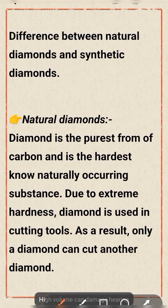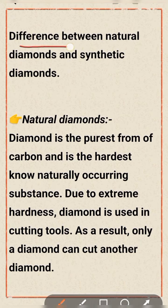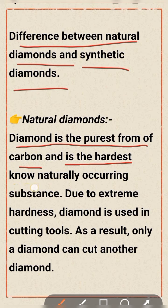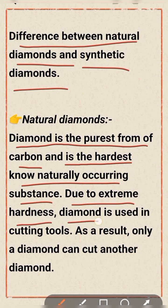The difference between natural diamonds and synthetic diamonds. Natural diamonds are the purest form of carbon and the hardest known naturally occurring substance. Due to extreme hardness, diamonds are used in cutting tools — as a result, only a diamond can cut another diamond.